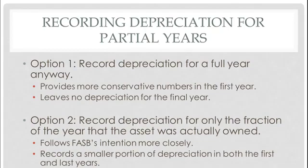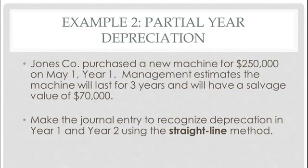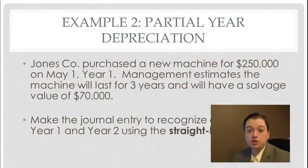So let's transition into our example of partial year depreciation. Here's Jones Company again. Let's assume now that they've purchased a new machine, $250,000, on May 1 of year 1. Management believes the machine will last for three years and will have a salvage value of $70,000. We want to record the straight line depreciation for both year 1 and year 2 using the partial year depreciation method. We're going to do it FASB's preferred way.